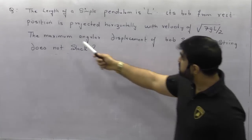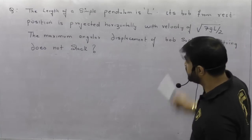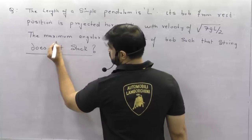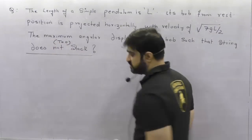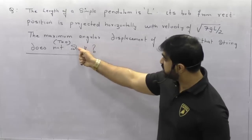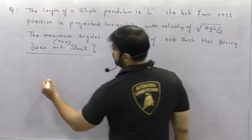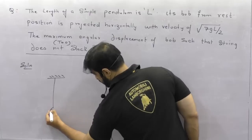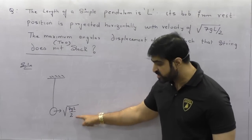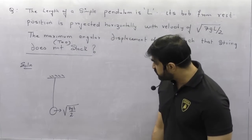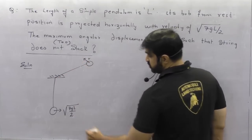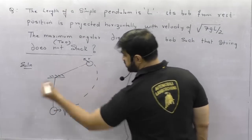Next question: the length of a simple pendulum is L. Its bob is projected horizontally with velocity √(7gL/2). Find the maximum angular displacement such that the string doesn't slack. 'Doesn't slack' means tension becomes 0. Since √(7gL/2) is less than √(5Rg) but greater than √(2Lg), it will leave the circle in the upper quadrant with some velocity V, then perform projectile motion.